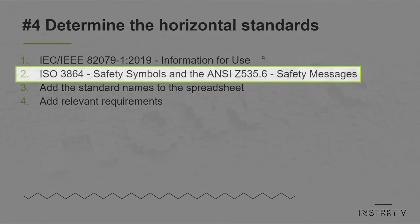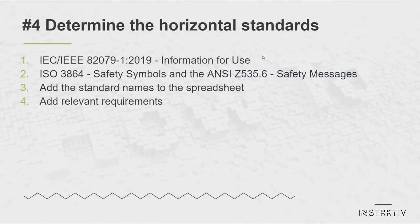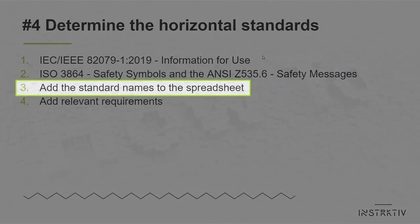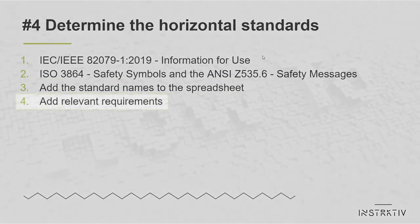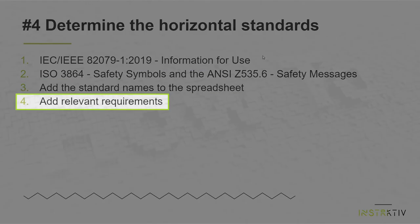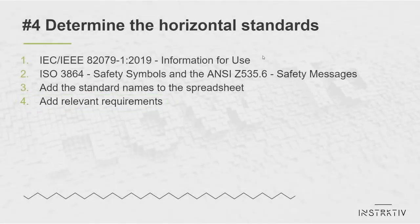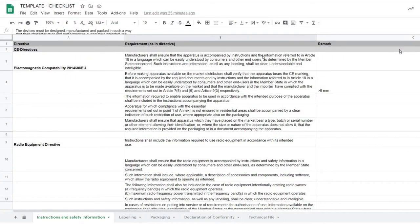Optionally, you can also purchase the ISO 3864 standard on safety symbols or the NZZ535.6 on safety messages. Add these standard names to the first column of the spreadsheet and add any relevant requirements to the second column. This is how your completed spreadsheet may look.